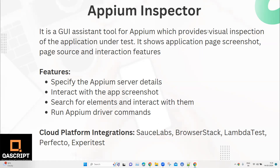Moving on to our next topic on mobile automation with Appium, we are going to look at what is the Appium Inspector and how we can set it up on Windows. Appium Inspector is basically a GUI assistant tool for Appium which helps you to visually inspect different mobile applications. It shows the application page screenshot, the page source, and how you can interact with that particular application from Appium. It's basically a tool through which you can find out what the element properties are in your mobile application.